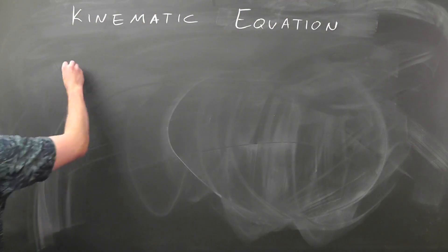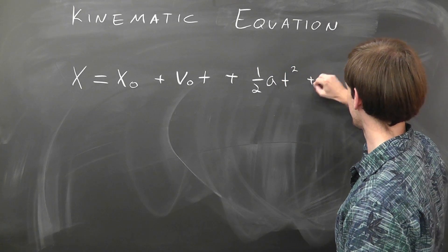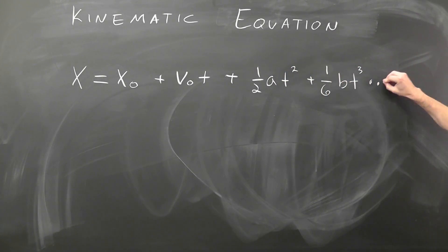Let's start with the kinematic equation. x equals x0 plus v0 t plus 1 half a t squared plus 1 sixth b t cubed and higher order terms.